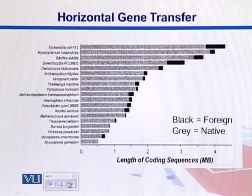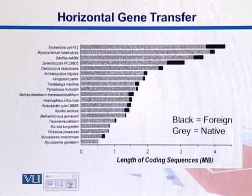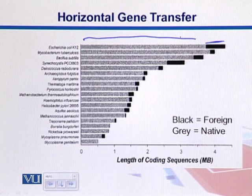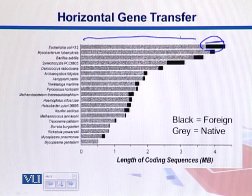In this chart, we have the length of coding sequences and the proportions coming from foreign elements versus native ones. Gray indicates native sequences and black ones are coming from foreign sources — that is the indication of horizontal gene transfer. We can see that mostly in E. coli K12 there is the biggest proportion of foreign genes, and then Synechocystis also has a huge proportion of those foreign genes.